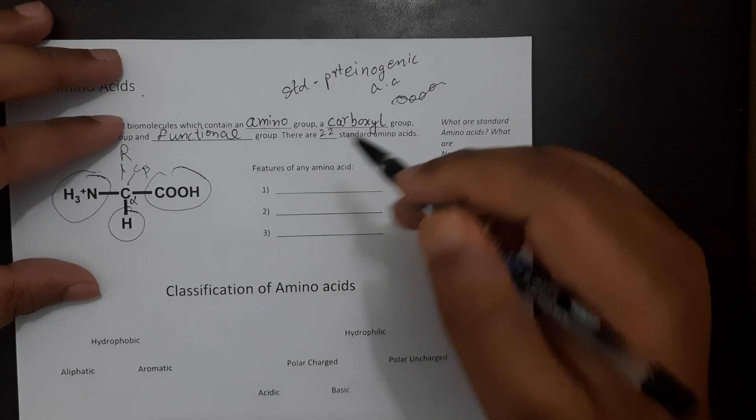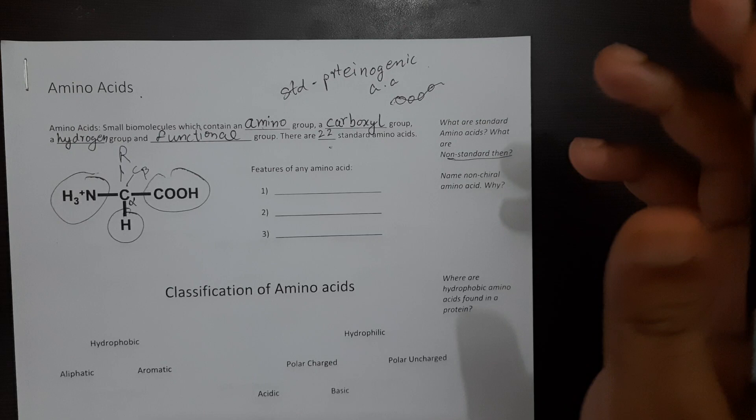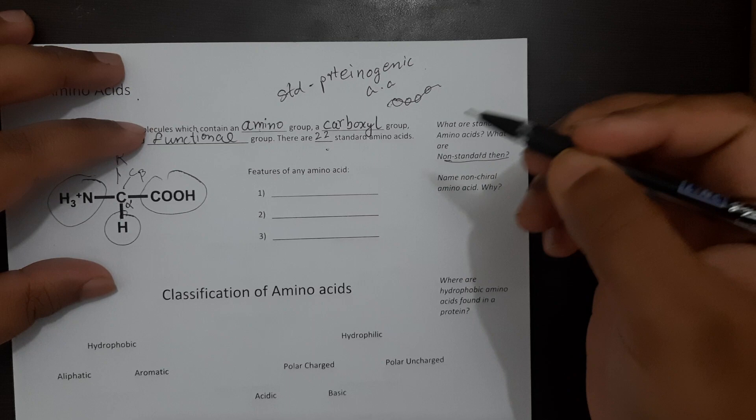So then the question arises what are non-standard amino acids? Non-standard amino acids are those amino acids - in our body there are several amino acids but only 22 of them participate in the formation of proteins whereas the other ones are part of other pathways in our body. Most famous example of a non-standard amino acid is ornithine.